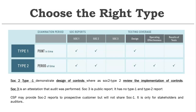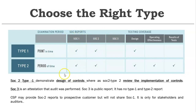SOC 2 Type 2 is asked very frequently in the exam — it represents the effectiveness of controls. This is the most important report. SOC 3 is simply an attestation that an audit was performed — it is a public report with no Type 1 or Type 2. A CSP may provide SOC 2 reports to prospective customers but will not share SOC 1 reports; those are for stakeholders and auditors only. SOC 3 is available to everyone.